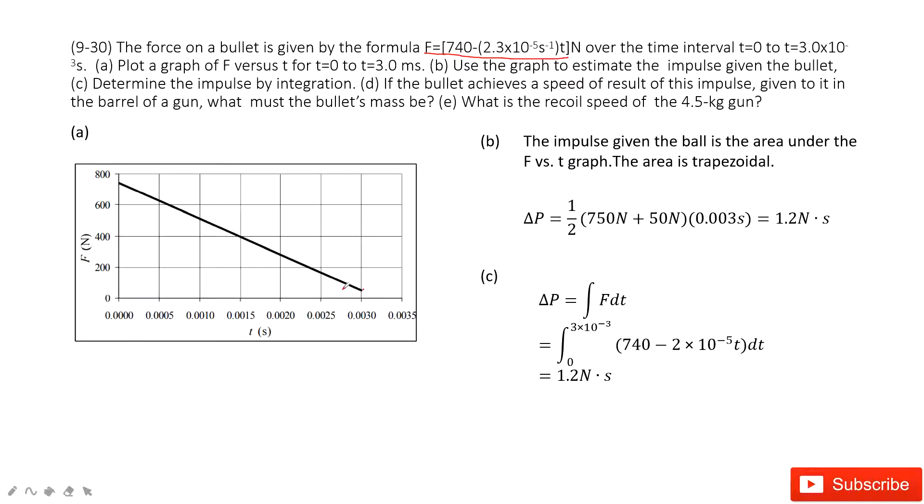The second one is to find the impulse on this picture. As we know the impulse is just, on the F-t graph, the area under the line. Do you agree? Yes. So then we can find the area under the line, these areas. Can you find it?